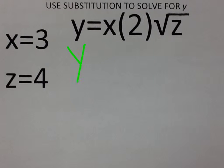We know that y equals x, where x is equal to 3, multiplied by 2, multiplied by the square root of z, where z is equal to 4.